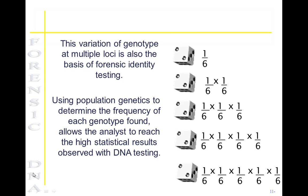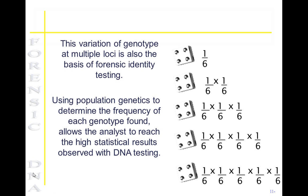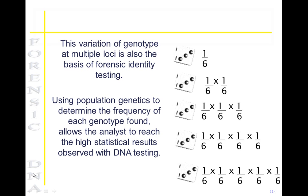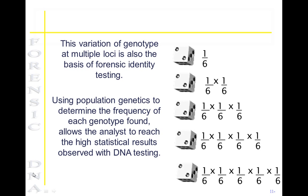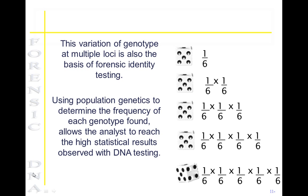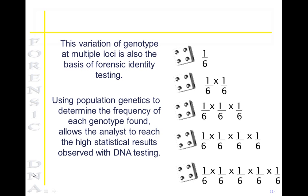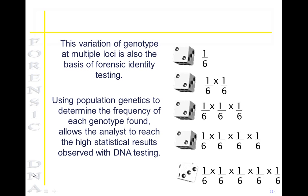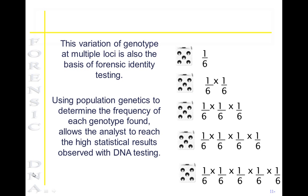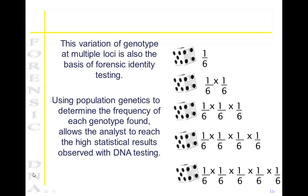If we think about dice and we roll a die to see how many times you can obtain the number six, this would be one out of six times. If you use two dice it would be one out of six multiplied by one out of six. This is the basis of forensic identity testing. Using population genetics to determine the frequency of each genotype found, a DNA analyst can obtain very high statistical results with DNA testing.